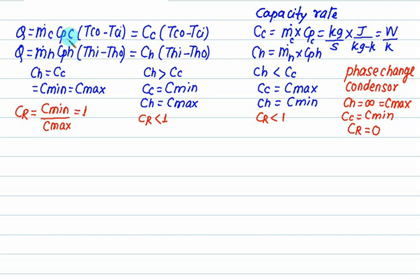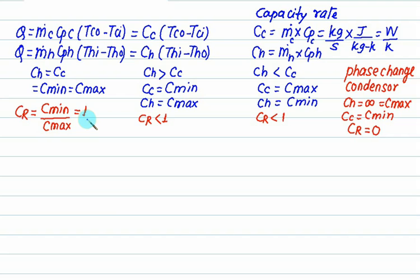Here m-dot and Cpc are the mass flow rate and specific heat respectively. We have three conditions: Ch equal to Cc, Ch greater than Cc, or Ch less than Cc. In the first case Ch equals Cc equals Cmin equals Cmax. In the second case, Cc equals Cmin and Ch equals Cmax. In the third case, Cc equals Cmax and Ch equals Cmin. The capacity rate ratio CR is always defined as Cmin divided by Cmax.